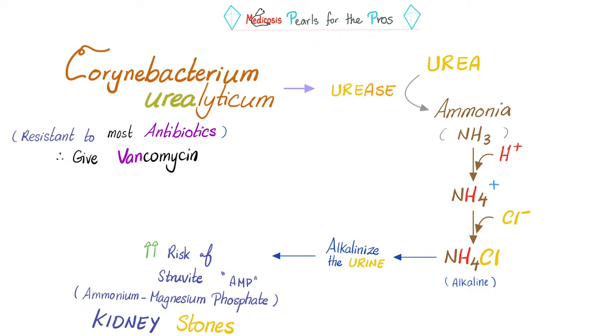The most nasty of which are the struvite stones, also known as ammonium magnesium phosphate stones. They are so big and they look like a coffin, because they are the most evil.